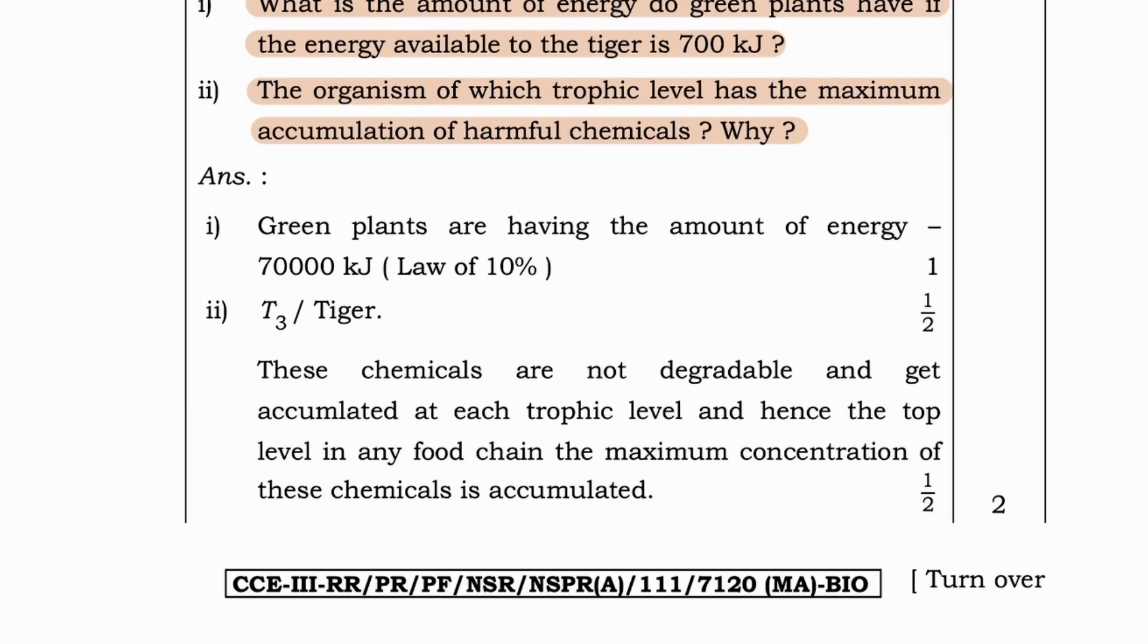For first question, as we have discussed previously, green plants are having the amount of energy 70,000 kilojoule. Here, law of 10% is applied. And then as for second question, T3 tiger. Tiger has maximum accumulation of harmful chemicals. These chemicals are not degradable and get accumulated at each trophic level. And hence the top level in any food chain, the maximum concentration of these chemicals is accumulated.